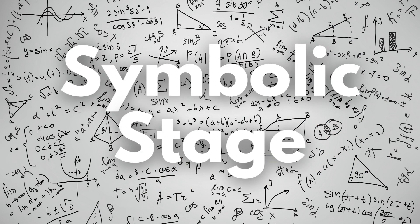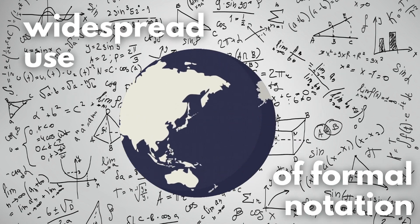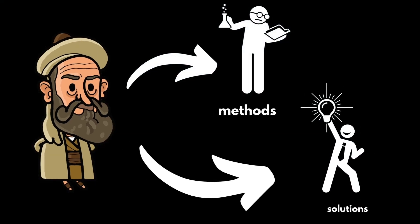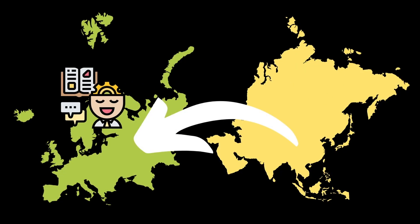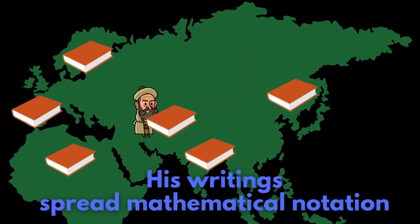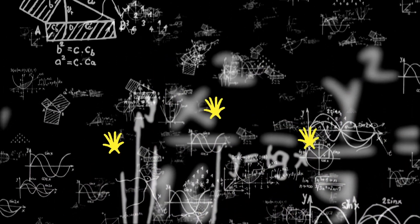And finally we come to the symbolic stage of mathematical history. This is characterised by the widespread use of formal notation to represent mathematical concepts. We start to see this emerge following the developments in algebra by Al-Khwarizmi, who presented methods and solutions as well as a standard notation that was widely accepted in the eastern civilisations and later adopted by the west. In addition, he also assisted in spreading the Hindu-Arabic numeral system wider, and this is where the development of mathematics starts to explode and the language of mathematics becomes universal.